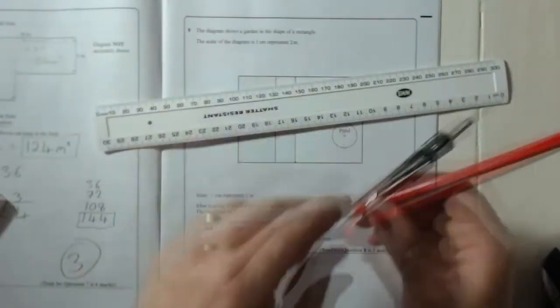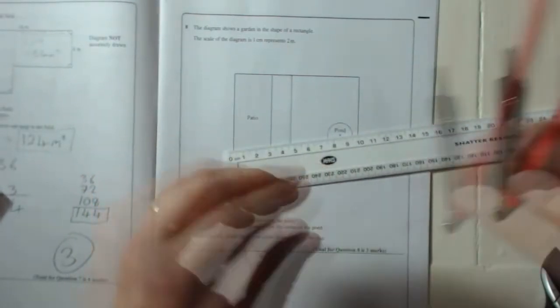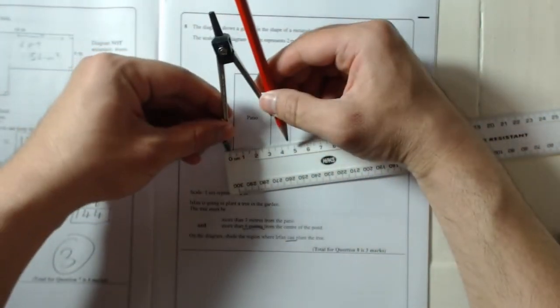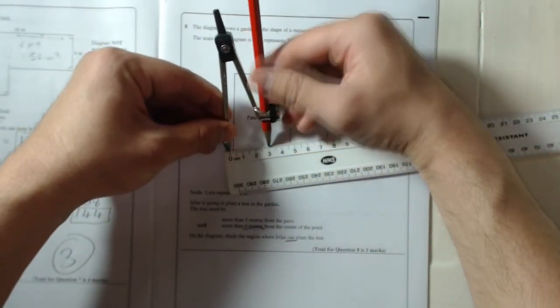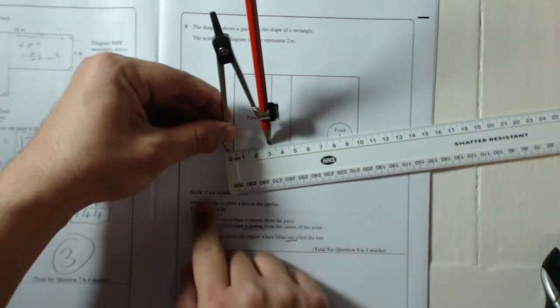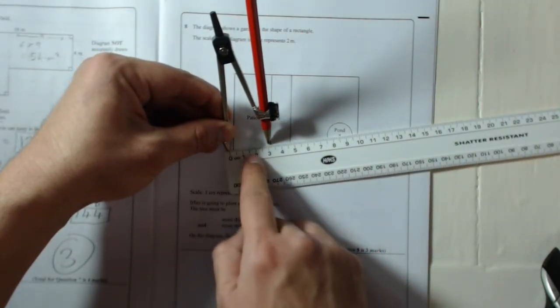So what we're going to do, put the pencil in the compass, open it out three centimetres, like that. Remember, every centimetre is two metres, so it's two, four, six metres.